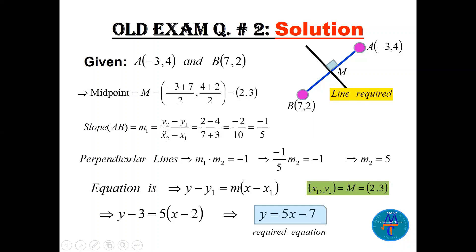Find the slope of AB: (y2−y1)/(x2−x1) = (2−4)/(7−(−3)) = −2/10 = −1/5. Since the lines are perpendicular, the product of slopes is −1. If one slope is −1/5, the other slope must be 5. Using slope 5 and midpoint M(2, 3): y − 3 = 5(x − 2), which gives y = 5x − 7.